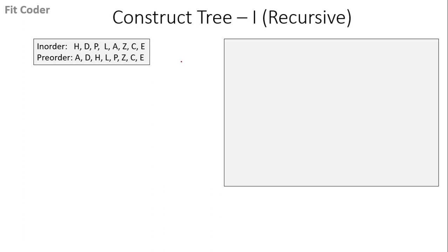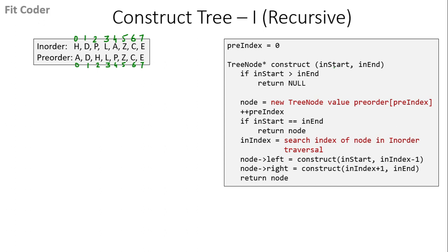Now let's see how we can do this via recursion. The first step is we keep a pre-index variable initialized to zero - this is the index into the preorder array. We write down the indices. Then we have a function 'construct' which takes two parameters: in_start and in_end, the indices for the inorder array. The first call will be construct(0, 7). We compare in_start and in_end - this is false - then we create a new tree node with preorder[0], which is A. We increment pre-index to 1, then search A in the inorder traversal. The index of A in the inorder traversal is 4, so in_index is 4. We then call construct(0, 3) for the left subtree.